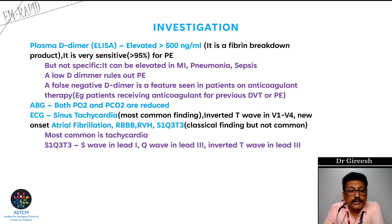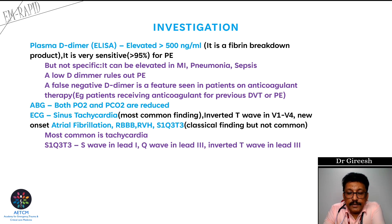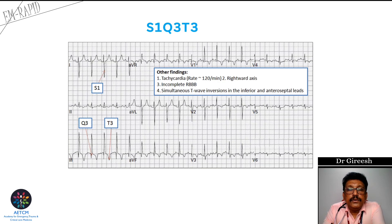If somebody presents with chest pain, tachypnea, tachycardia, and ECG showing an RBBB pattern, we have to suspect pulmonary embolism. A positive D-dimer adds to the diagnosis; a negative D-dimer can possibly rule it out in the ER. Here is the S1Q3T3 ECG — you can see the S wave in lead 1 and Q wave with T-wave inversion in lead 3.